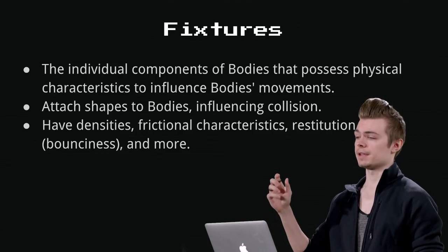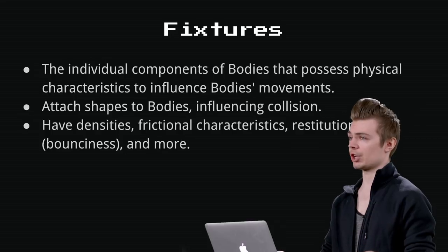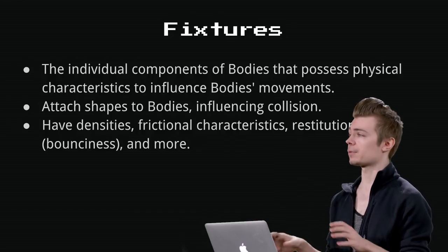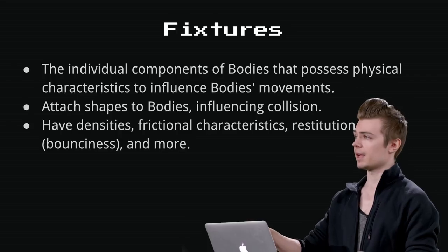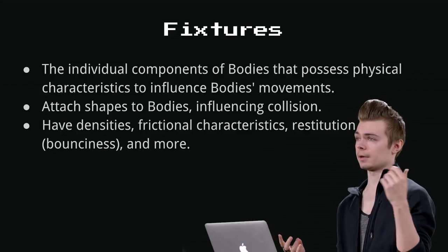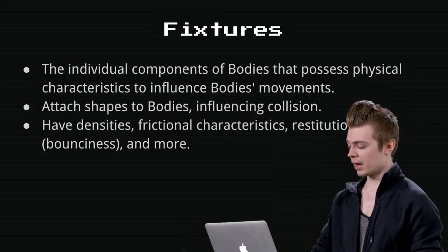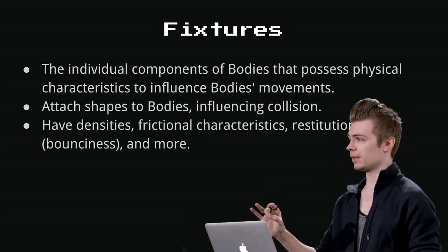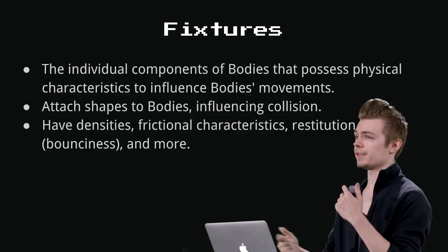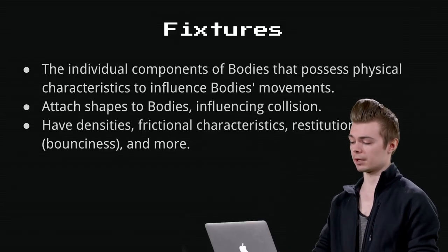A fixture is an abstract object that allows you to attach a shape to a body. Bodies are shapeless by default — they don't interact with anything else until you give them a fixture. You give the fixture a body and a shape. For example, for the round alien, we create a body and attach a circle fixture — Box2D then knows that alien should interact with things as if it were round, triggering collisions based on a circular hitbox as opposed to a rectangular or polygonal hitbox.